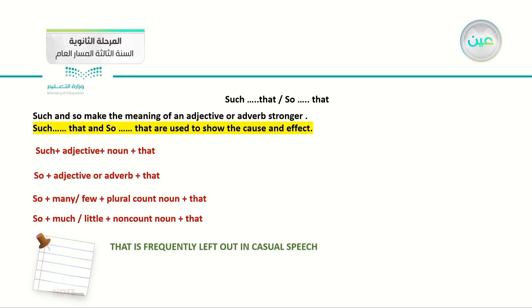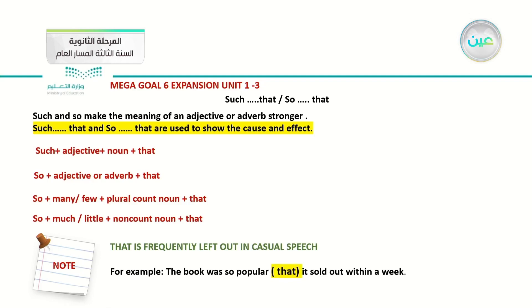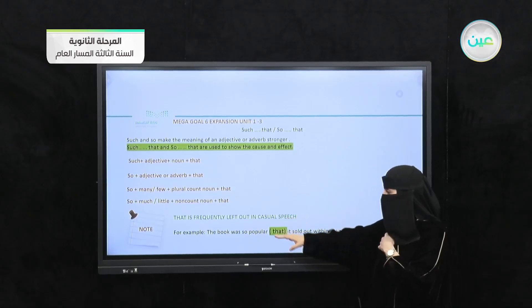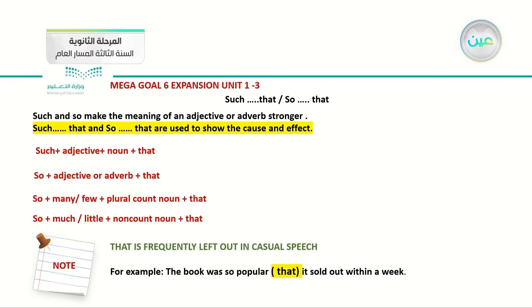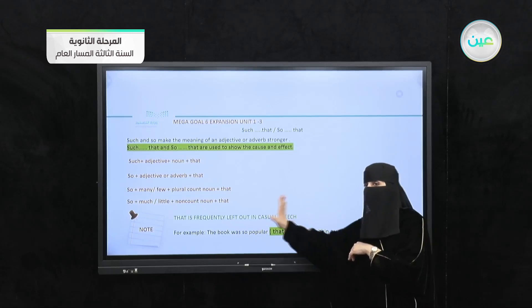One important note: 'that' is frequently left out in casual speech. For example, 'The book was so popular it sold out within a week' — here 'that' is omitted in speech and the meaning doesn't change. However, when writing, you should add 'that' to join the two clauses as a cause and effect: 'The book was so popular that it sold out within a week.'